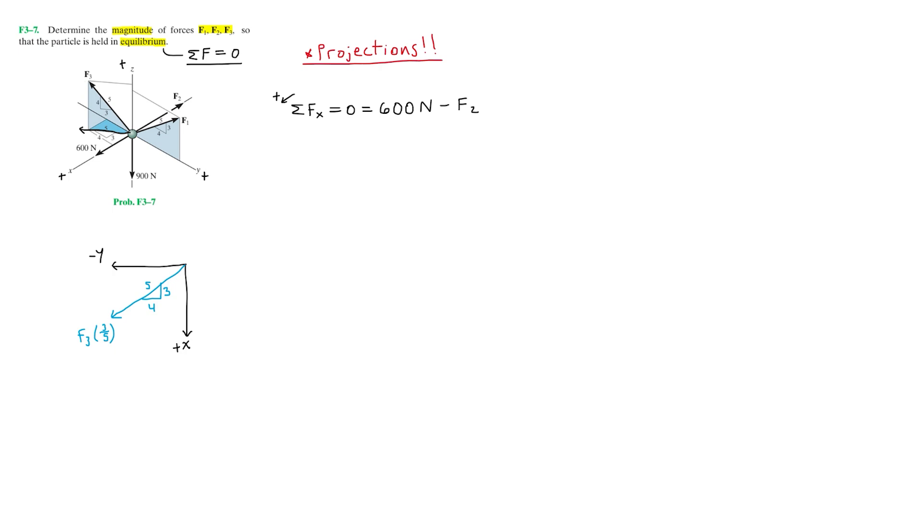Now we can project this F3 times three-fifths over to our X axis to obtain the X component. We do this by using the slope triangle where side 3 again corresponds to the X axis as it is parallel to the X axis. So this will be again times three-fifths. And this final projection points towards the positive X axis. So this will be plus F3 times three-fifths times three-fifths. And that completes our equation one.